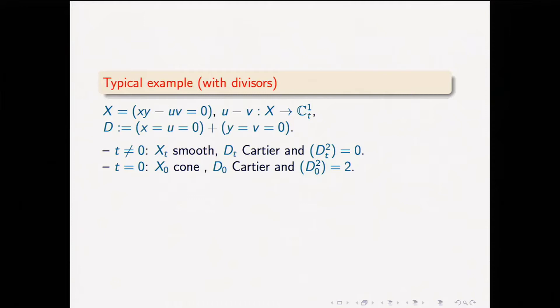If T is non-zero, the fiber is smooth and I get a Cartier divisor — on a smooth quadric surface, just two disjoint lines, and in the projectivization the self-intersection is zero. If I set T equals 0, the fiber is a quadric cone and I have two lines that meet at the vertex. That's a hyperplane section, so it's a Cartier divisor, and the self-intersection is 2. If I projectivize this example, I get a family of surfaces with a divisor that's Cartier on every fiber, but visibly not Cartier because the self-intersection jumps.